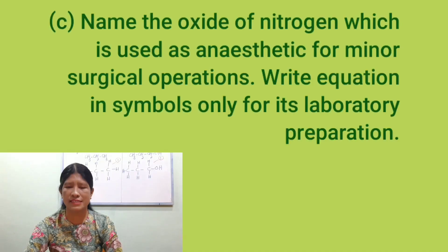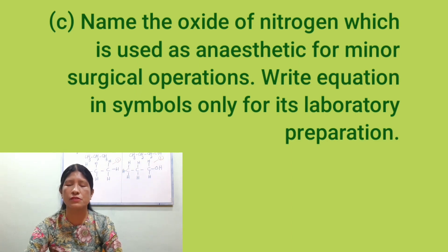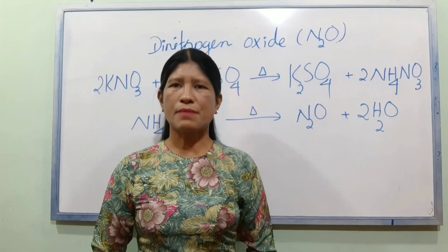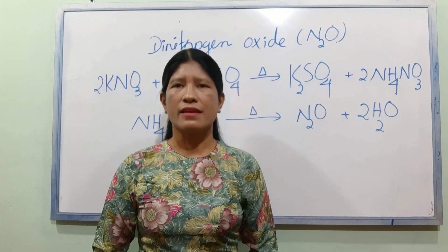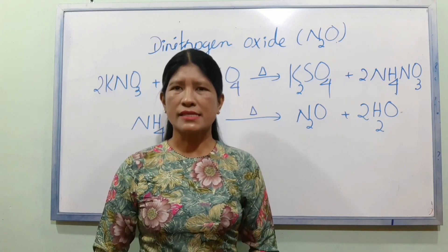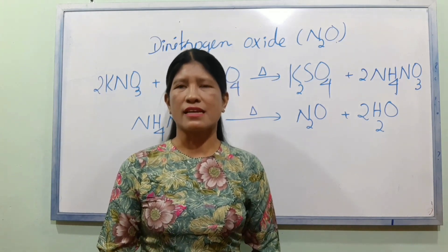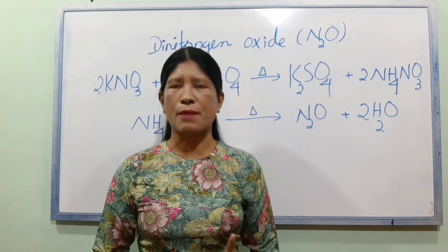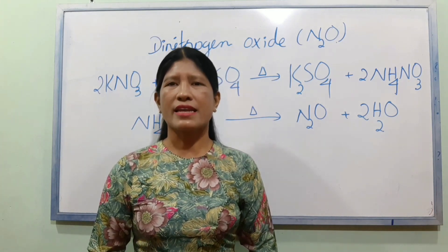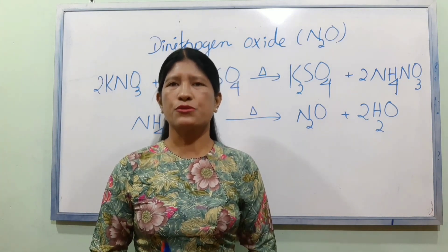Number C: Name the oxide of nitrogen which is used as an anesthetic for minor surgical operations, and write the equation for its laboratory preparation. The oxide of nitrogen used as an anesthetic is N2O.